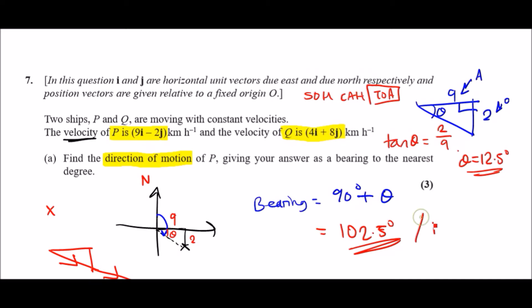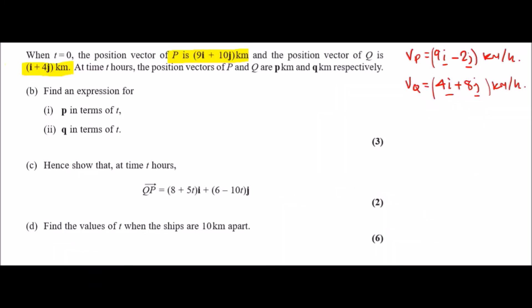Part b: I've already taken some information that might be useful—the velocities of P and Q. According to this, when the time is zero, the position vector of P is 9i plus 10j, and for Q is i plus 4j. At time t hours, the position vectors of P and Q are p and q respectively. Let's find expressions for both.